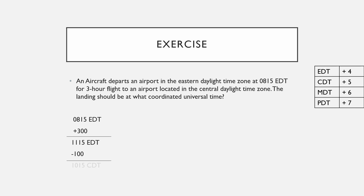We subtract 0100 from 1115. Note: if we were converting from CDT to EDT we would add 0100 instead. The result is 1015 CDT. Now for the last step: converting to Zulu time. Going back to our table, the number next to Central Daylight Time is 5, meaning we add 0500. Adding 0500 to 1015 gives us 1515 Zulu — our arrival time in Zulu.